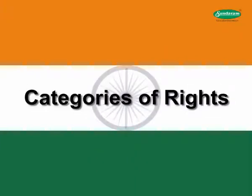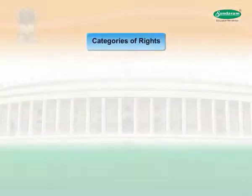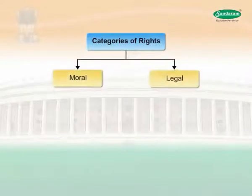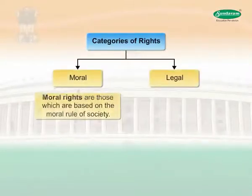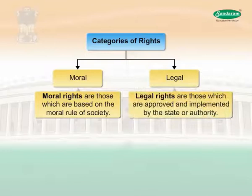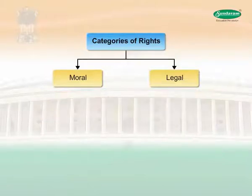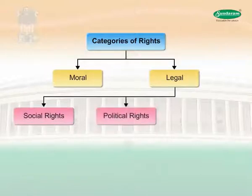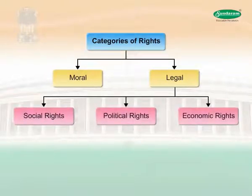Categories of Rights. Rights can be divided into moral and legal rights. Moral rights are those which are based on the moral rules of society. Legal rights are those which are approved and implemented by the state or authority. Legal rights are categorized as social, political, and economic. Now let's see each of these rights one by one.